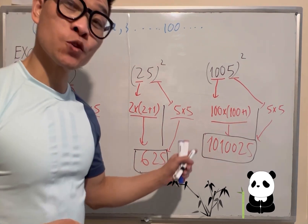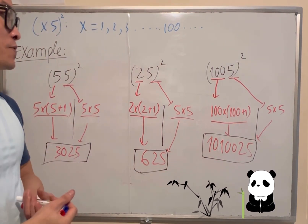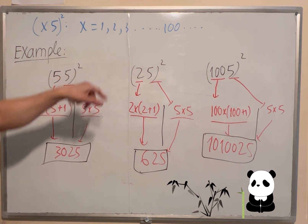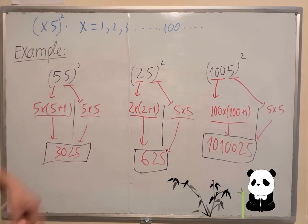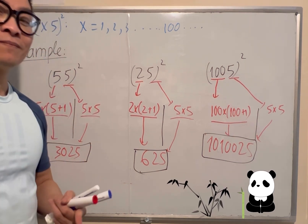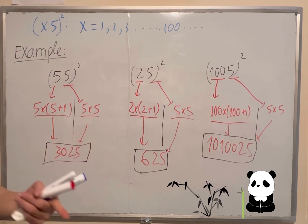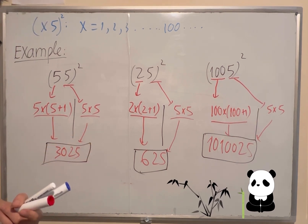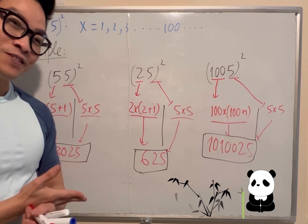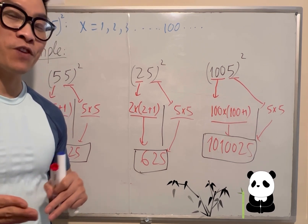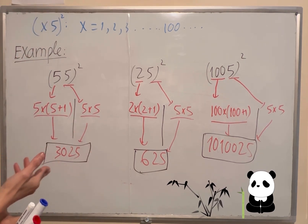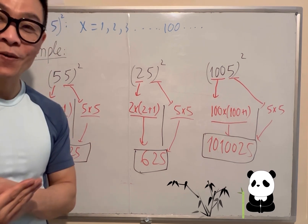So now you understand the solution for squaring numbers ending in 5 quickly. You can practice, and for any question like 15 squared: 1 times 1 plus 1 is 2, then 5 times 5 is 25, giving 225. Hope you understand it — enjoy with math, find solutions, and practice. Thank you, bye!